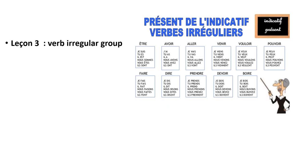Lesson 3. Leçon 3. Verb irregular group. Le verbe irrégulière. In this lesson, we are going to learn how to use the third irregular French verbs to describe an event in French. Merci. À bientôt.